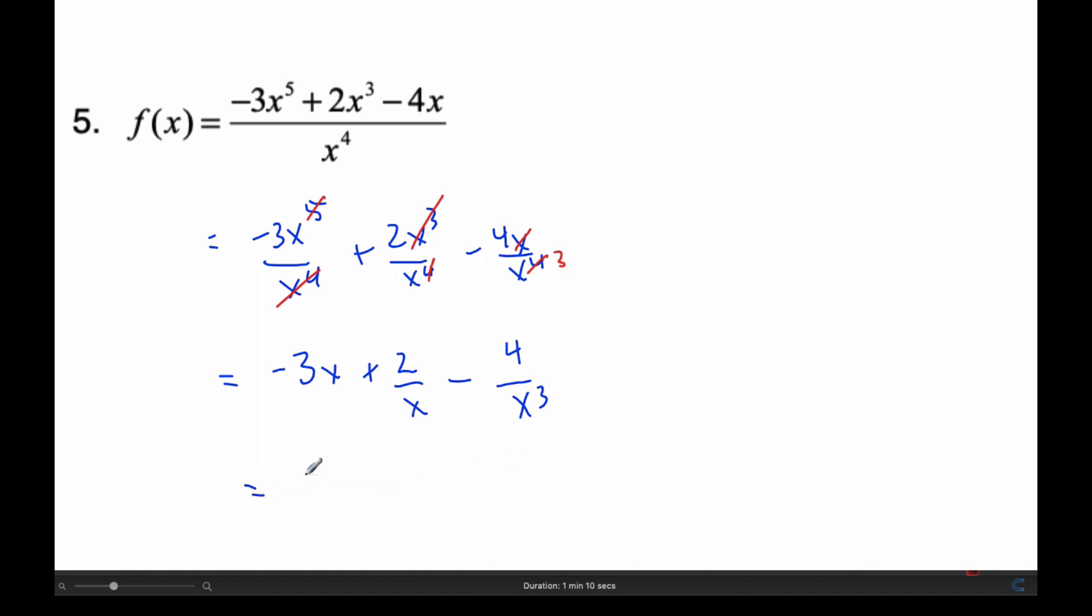And so now I simplify and put it in the terms of ax to the power of n, which is what the question is asking. This will be negative 3x plus 2x to the minus 1 minus 4x to the minus 3. Okay, and then we write it as this.